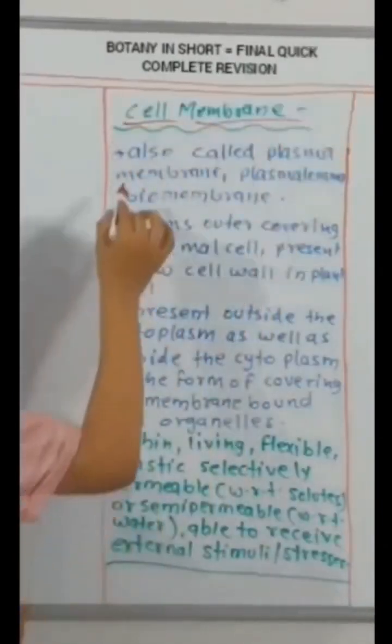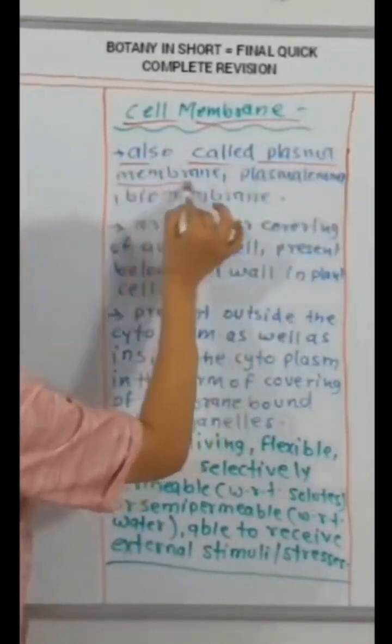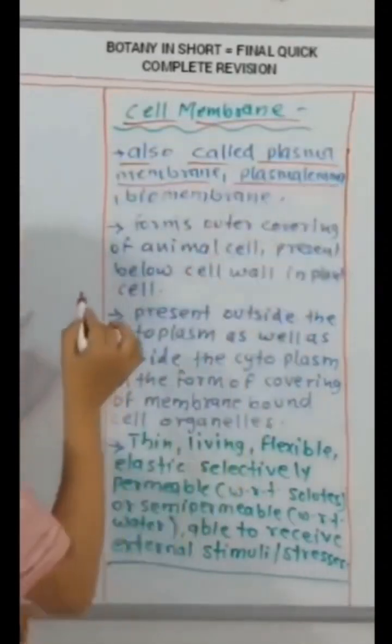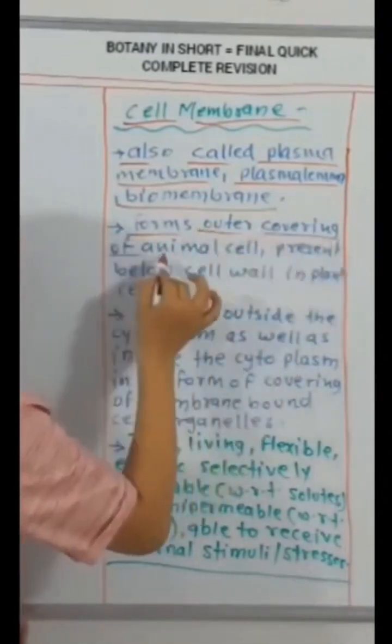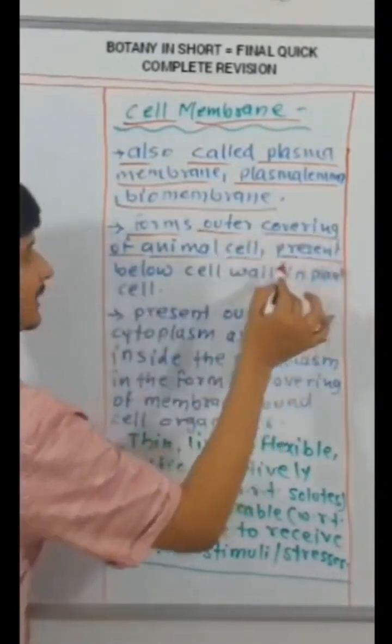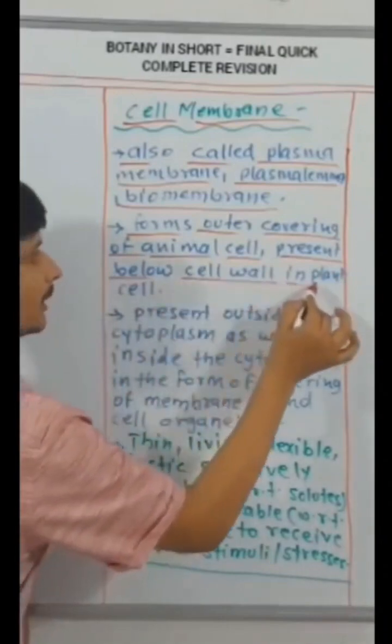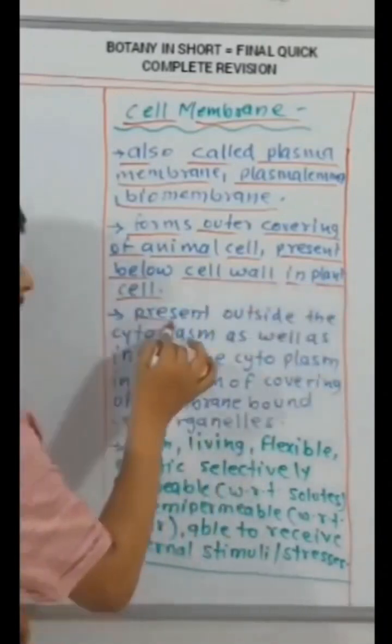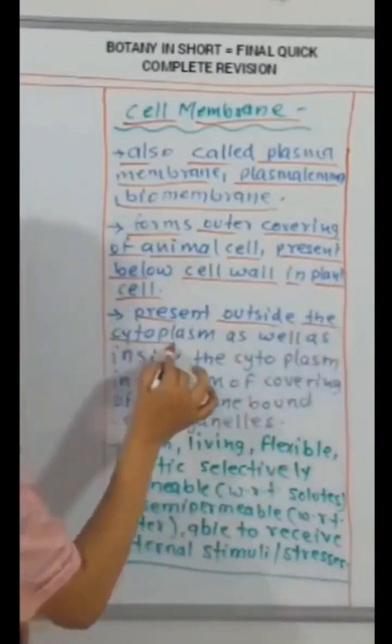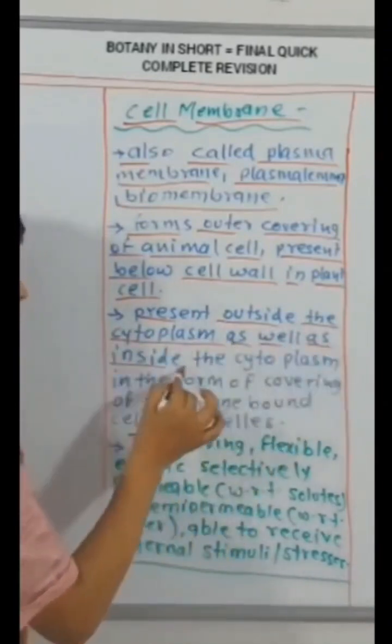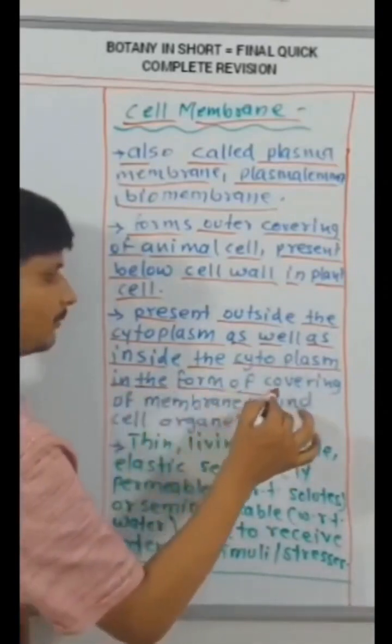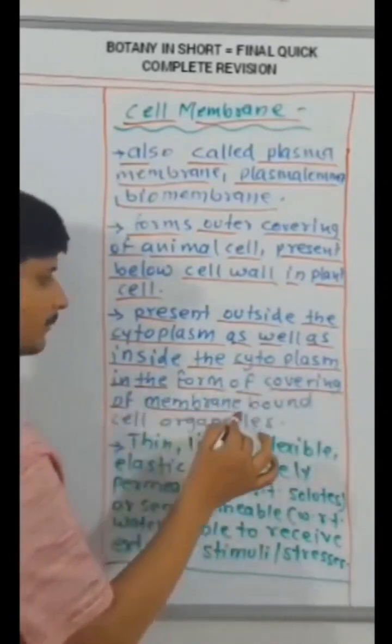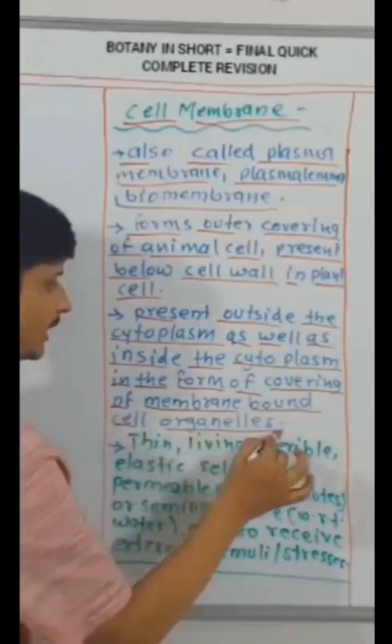Tube-like junction formed between two adjacent plant cells. Represents living structure passing through dead cell wall. Tubule-like extension of endoplasmic reticulum of adjacent plant cells. Passing through plasma membrane.